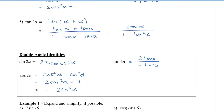So here we have our double-angle identities summarized. You don't have to memorize them, but it's useful to recognize them quickly so you don't always have to look back. Notice that cos 2α has three possible equivalent identities it can be converted to.